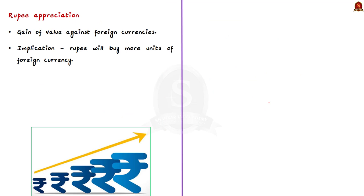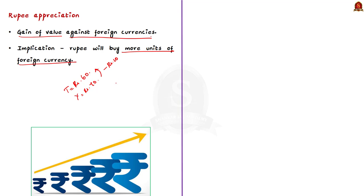Rupee appreciation means the Indian rupee is gaining its value against foreign currencies — in other words, rupee can buy more units of foreign currency than earlier. For example, if rupee is trading at 60 per US dollar today but was 70 yesterday, the Indian rupee has appreciated by 10 rupees per US dollar, meaning for purchasing one US dollar the trader has to pay 10 rupees less. This is the difference between rupee appreciation and rupee depreciation.